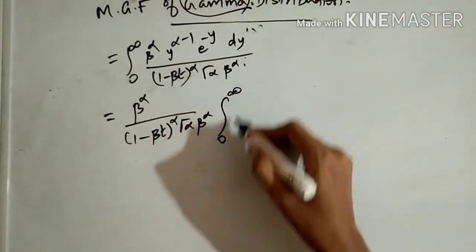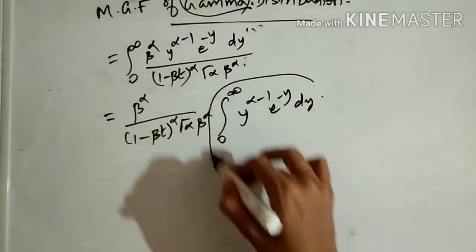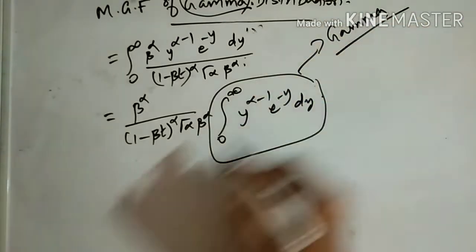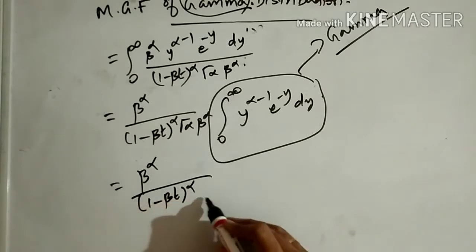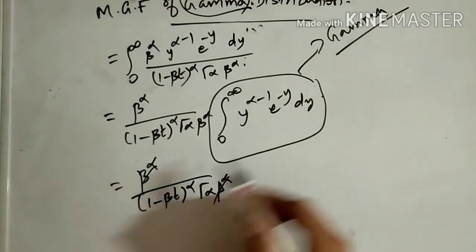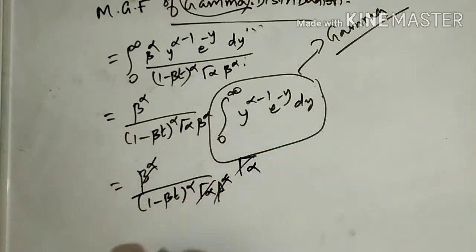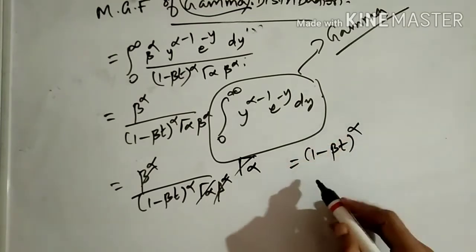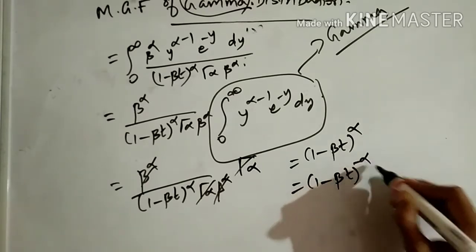The remaining integral from 0 to infinity of y^(α-1) e^(-y) dy is nothing but the gamma integral, equal to Γ(α). So we get β^α divided by (1 - βt)^α times Γ(α) β^α, times Γ(α). These cancel: β^α cancels with β^α, and Γ(α) cancels with Γ(α).